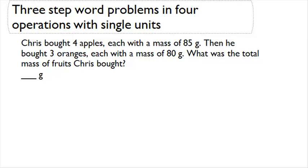Chris bought four apples, each with a mass of 85 grams. Then he bought three oranges, each with a mass of 80 grams. What is the total mass of fruits Chris bought?